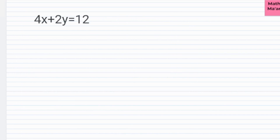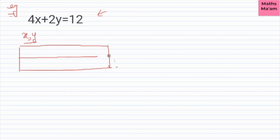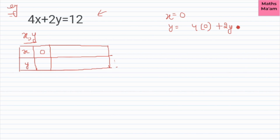To explain this, let's take an example: 4x plus 2y is equal to 12. This is a linear equation in two variables x and y. To find how many possible values there are for x and y, we make a table and put in different values. If x equals 0, then 2y equals 12, so y equals 6.